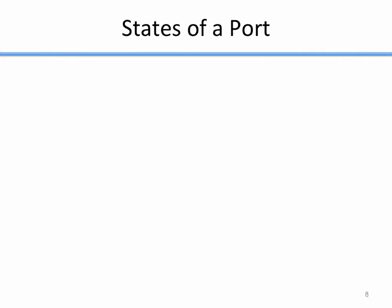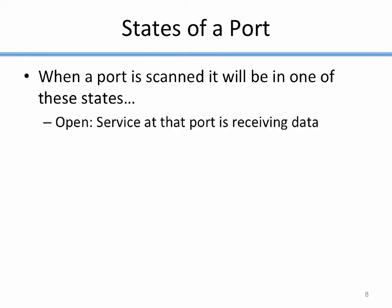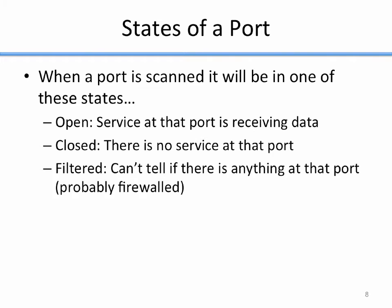When NMAP scans ports, there are three potential states a port could be in. The first is open — meaning there's a service at that port that's receiving data and communicating. Another state is closed — there's no service at that port, nothing running there. A third state is filtered — meaning NMAP can't tell if anything is running at that port. When you run a scan, you'll get back one of those three states.